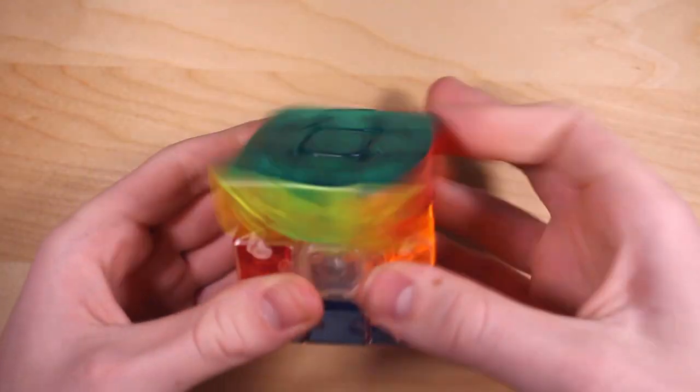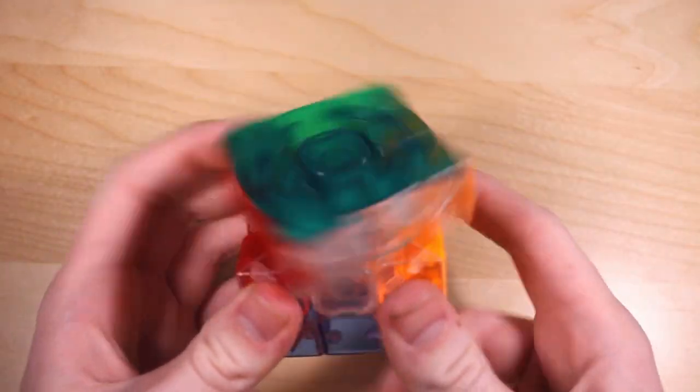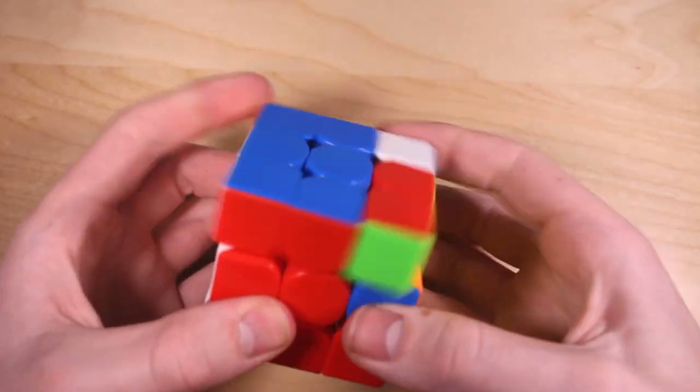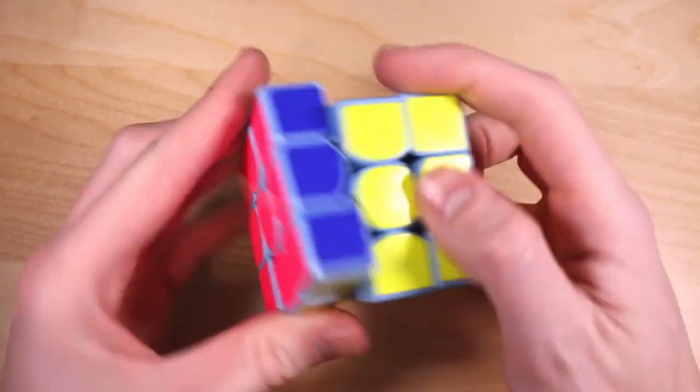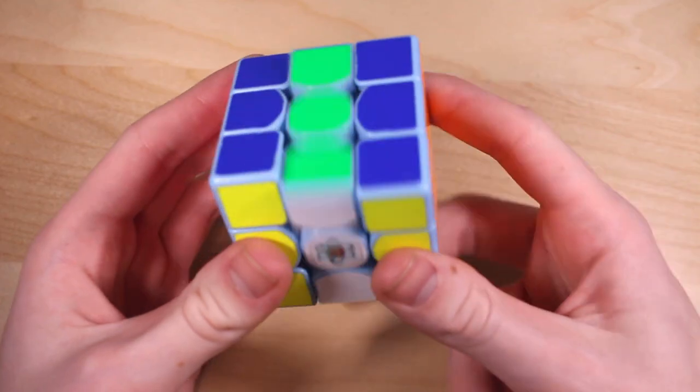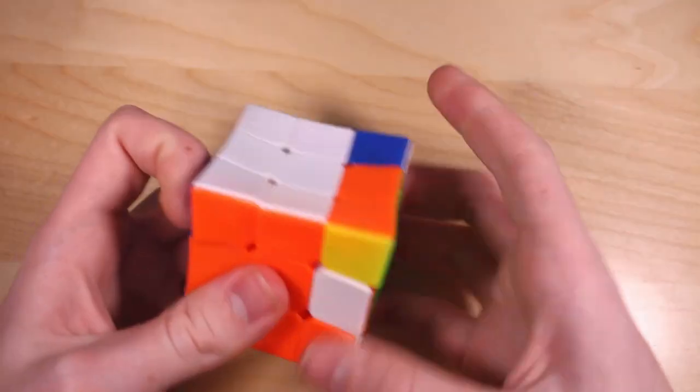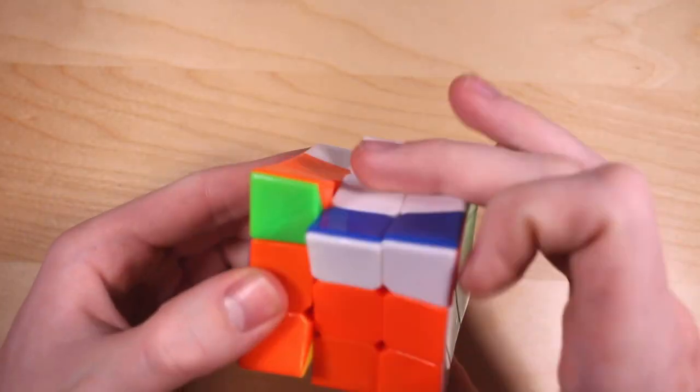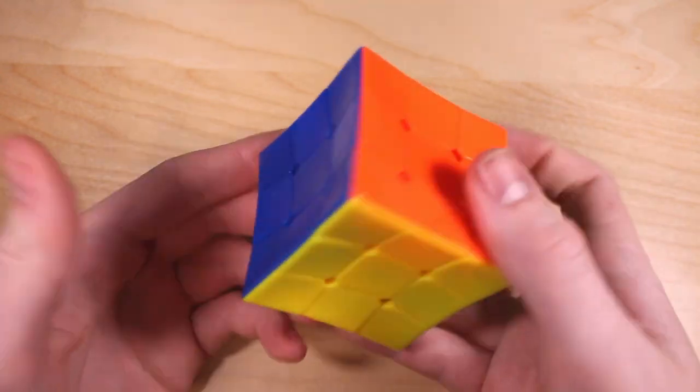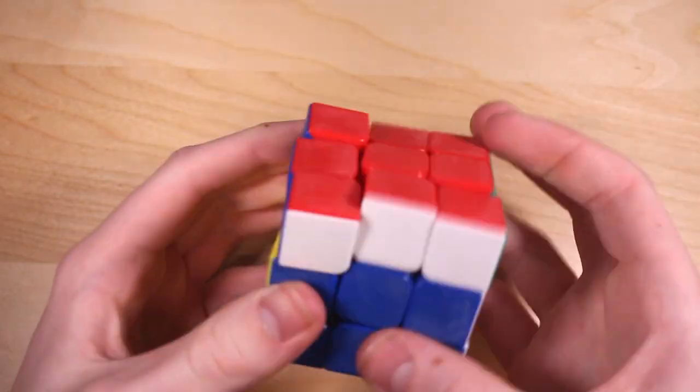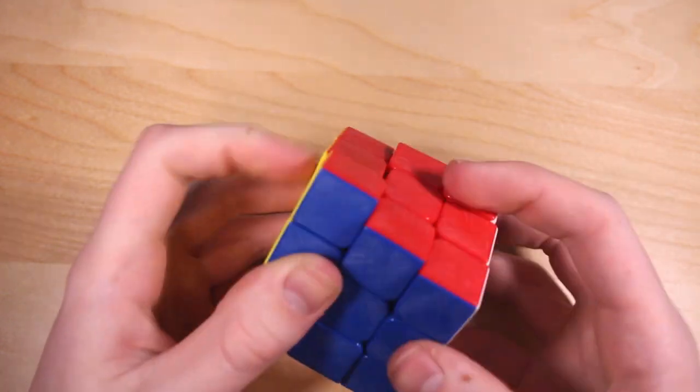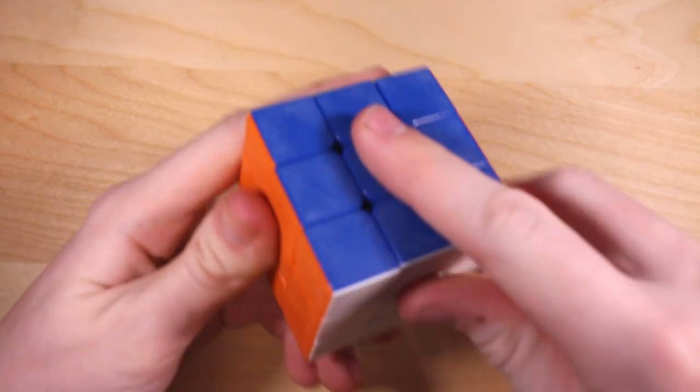YJ Yulong Transparent 3x3. Actually turns pretty well. Qi Yi Thunderclap version 2. A lot of people say it's a bad puzzle, but I actually like this one. MoYu Weilong GTS M. Purchased just when magnetic 3x3s were starting to become a thing. $3 unknown brand concave cube. It just does not turn well at all. Shengxiao Rainbow Cube. This does not turn well either. I used sandpaper on all the faces, so it feels kind of cool.